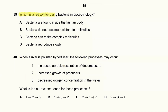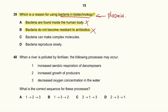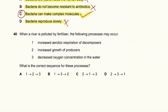Question 39: Which is a reason for using bacteria in biotechnology? Bacteria are important in biotechnology because of the plasmids they contain and because they are simple organisms — manipulating them does not invoke ethical concerns. Bacteria do become resistant to antibiotics, so that option is wrong. Bacteria can make complex molecules — for example, producing insulin — and they reproduce very fast. So we use bacteria in biotechnology because they can make complex molecules needed by humans.